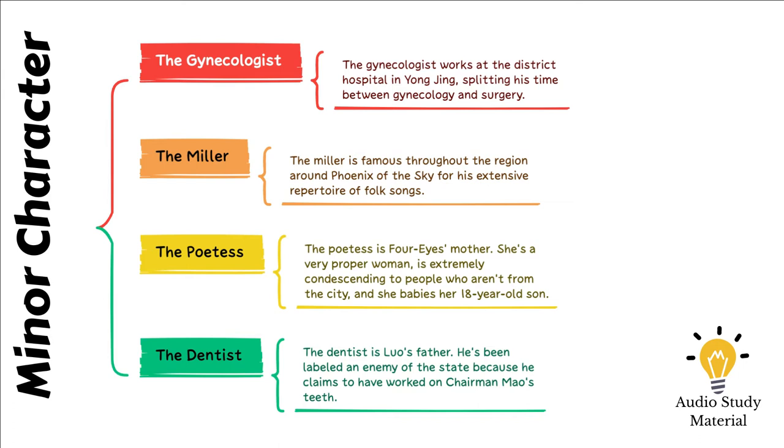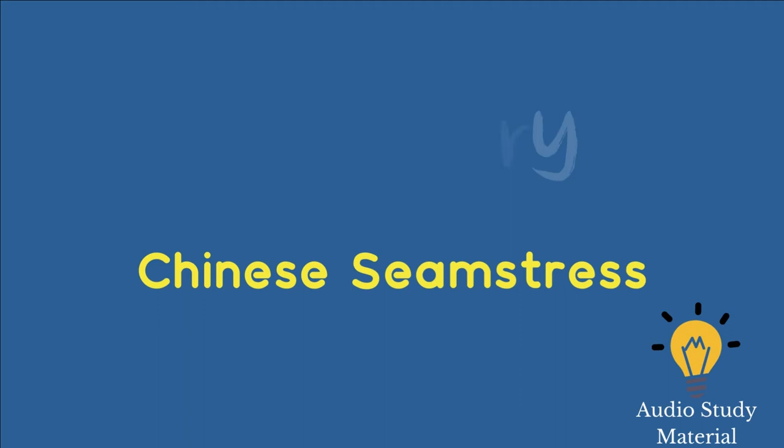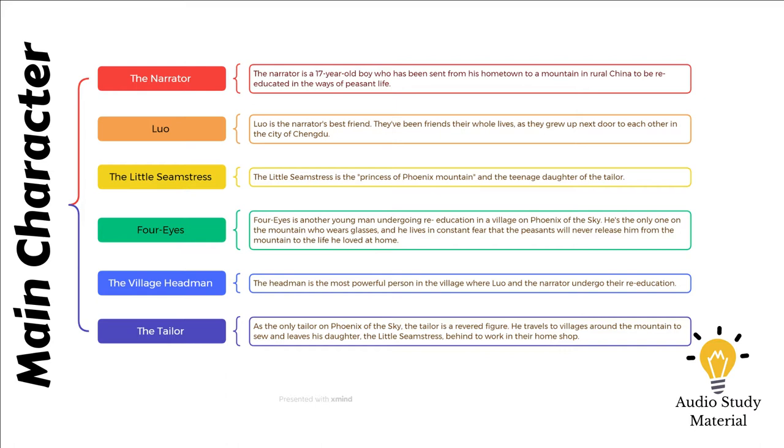Luo, the narrator, and the Little Seamstress attend a movie in Yongjing. The following evening, they discover at the hotel that a mother is on her way to recover her son from his re-education. The following day, while waiting for his pals on a trail, the narrator meets this woman. She is the poetess mother of Four Eyes, and she reports that he has obtained employment at a revolutionary publication. When she leaves and the narrator reveals what he has discovered to Luo and the Little Seamstress, the Little Seamstress proposes they grab the bag of books before Four Eyes leaves.